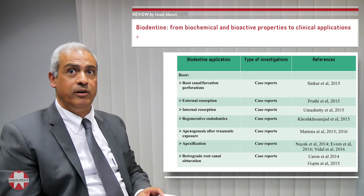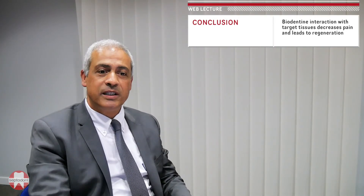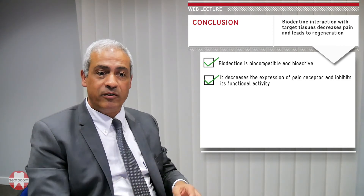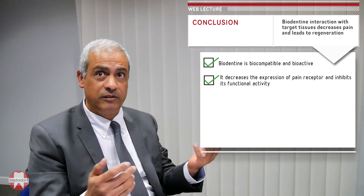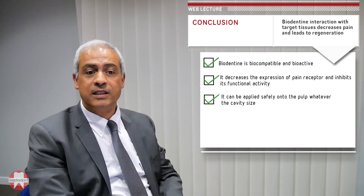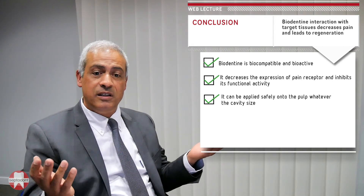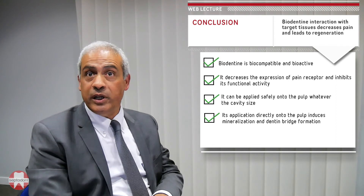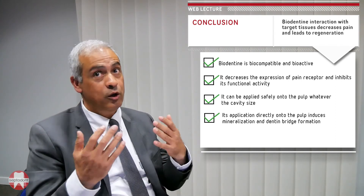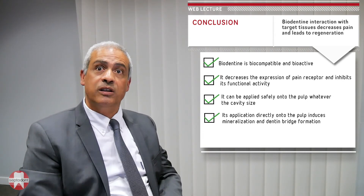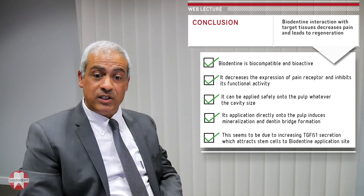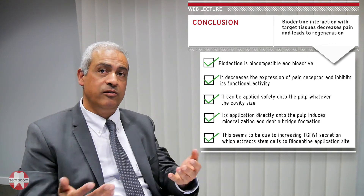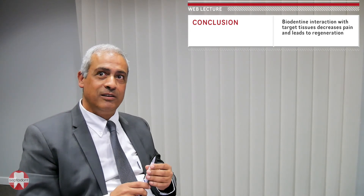In conclusion, biodentine is a biocompatible and bioactive material. It decreases the expression of pain receptors and inhibits their functional activity, which is why patients do not feel pain when biodentine is applied. It can be safely applied onto the pulp for indirect or direct capping, and even for pulpotomy. Its application directly onto the pulp induces mineralization and dentin bridge formation, driven by increased TGF-β1 secretion, which attracts stem cells to the application site where they synthesize and regenerate the missing dentin.